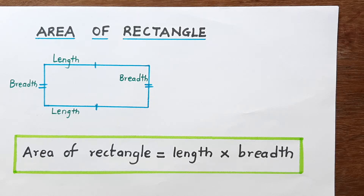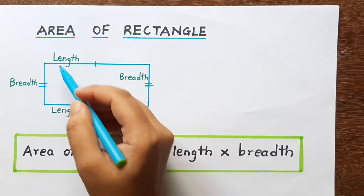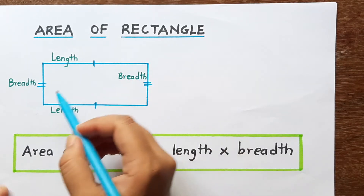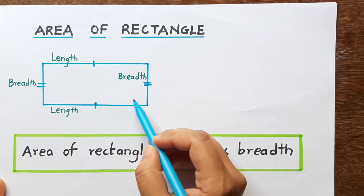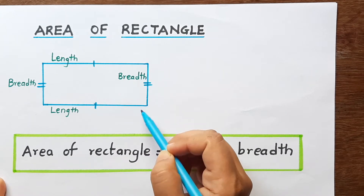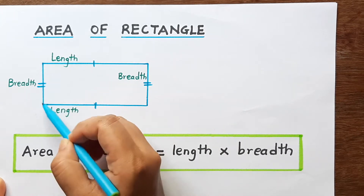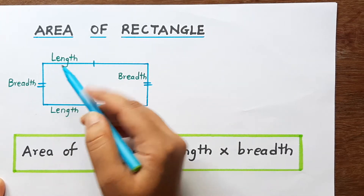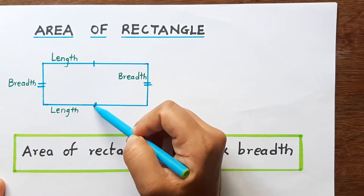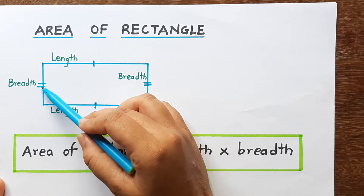Let us learn the formula to find out the area of a rectangle. A rectangle has length and breadth. Length means length and breadth means width. The opposite sides of a rectangle are equal.